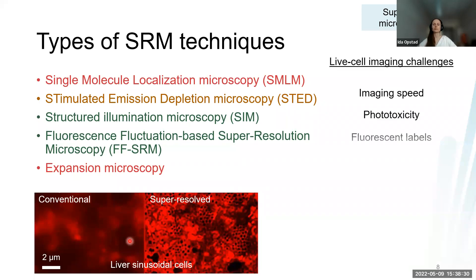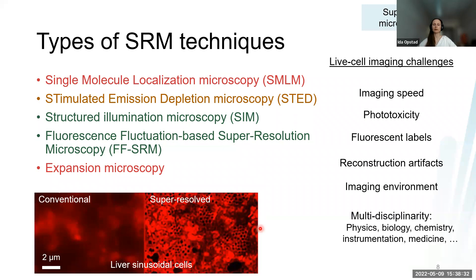There are many challenges, especially for live cell super resolution microscopy, especially imaging speed and phototoxicity. The imaging techniques most suitable for live cell imaging are ones that can go fast and use lower light dose. That's why SIM is popular because it can go relatively fast, doesn't use that much light, and you can do volumetric and multicolor imaging.